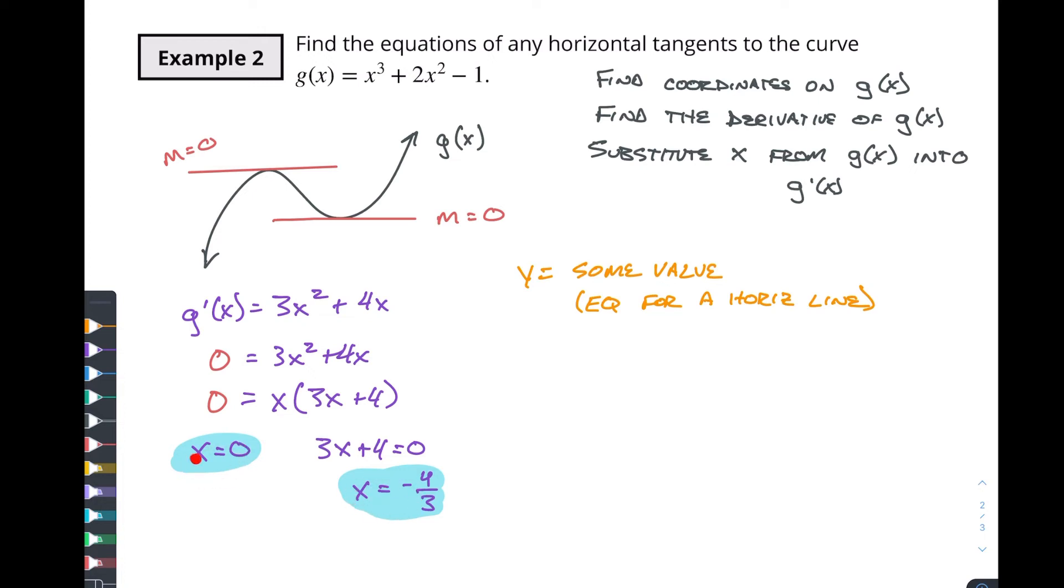Well, if these are the x values where the slope is zero, so we're kind of working backwards from this, we've got the derivative. We typically substitute the x value from the original function into the derivative to find the slope. But since we have the slope and now we found the x value, we basically want to take this x value and put it back into our original function.